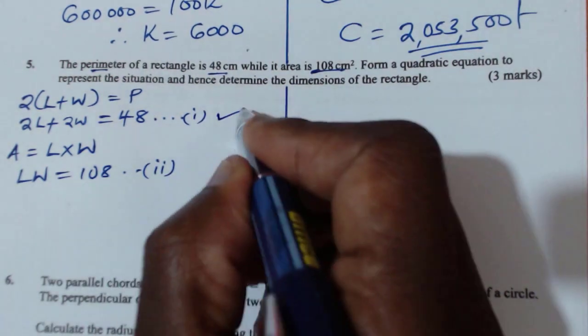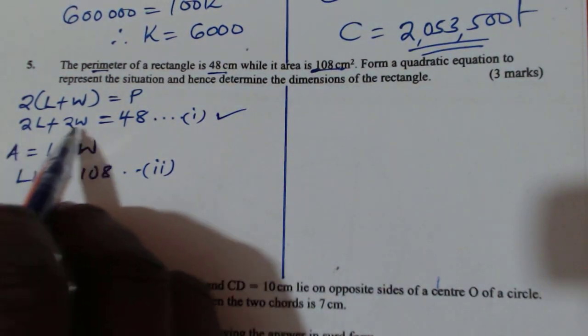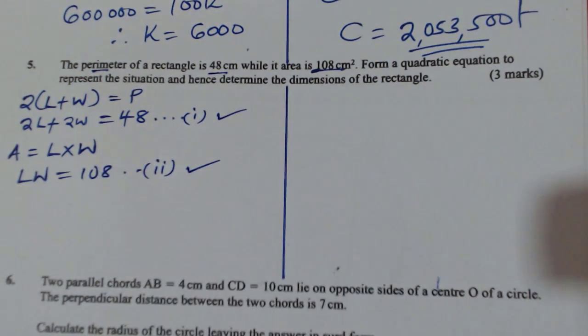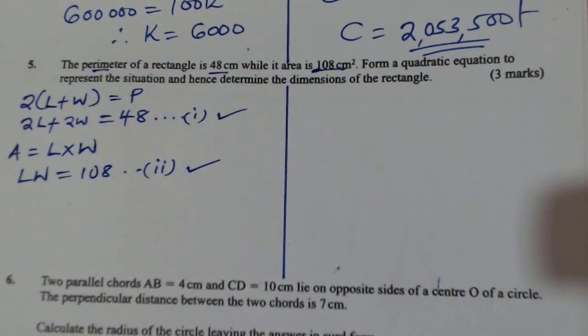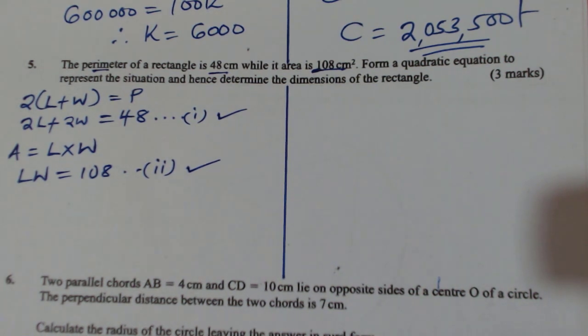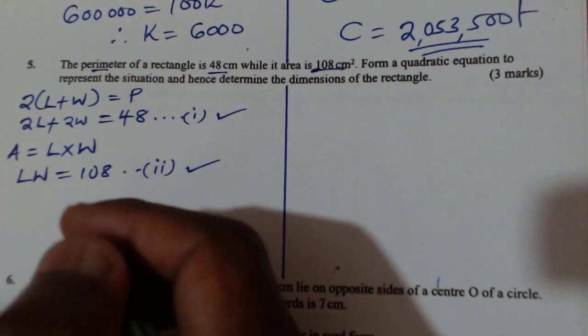So using these two, the expression for perimeter and the second one, expression for the area, we can find the value of W and L. These are simultaneous equations. So let us use a method. You can use substitution. Using the first equation,